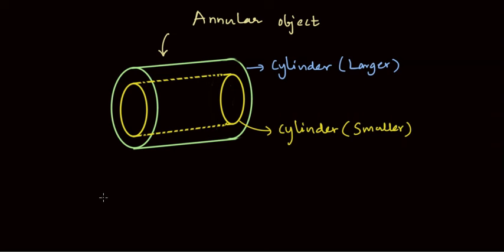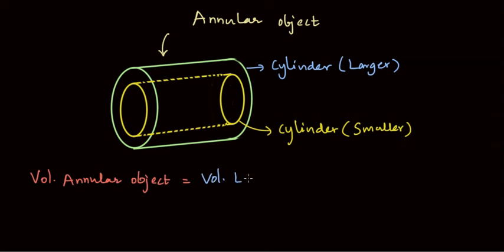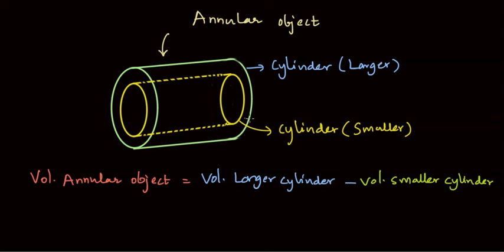In order to get the volume of the annular object that we see here, which is a hollow cylinder, we can do it by finding out the volume of the larger cylinder minus the volume of the smaller cylinder.